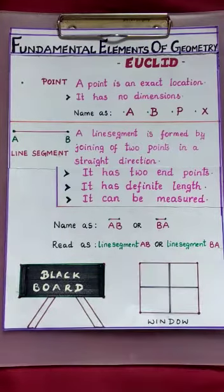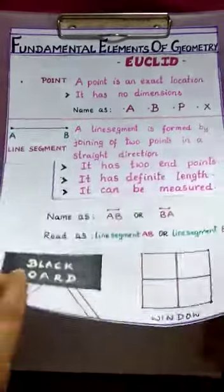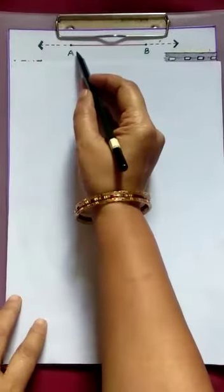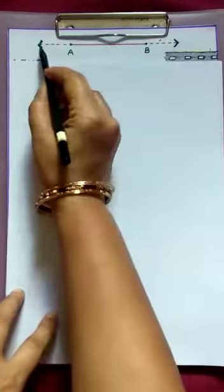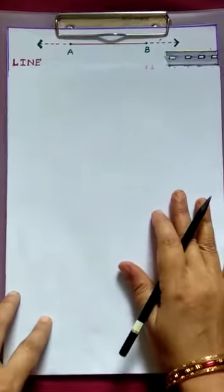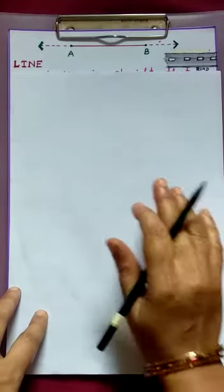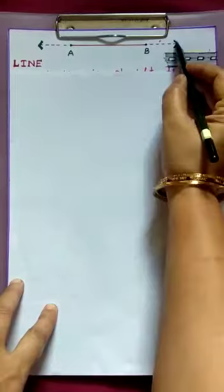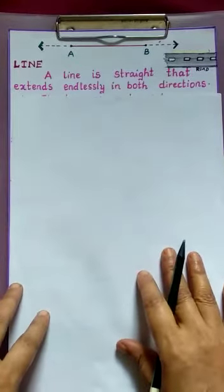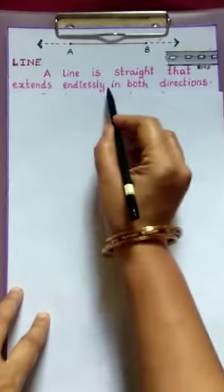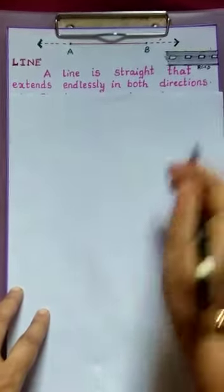Now, let us move to another concept. Children, if you observe here, this line segment is extended in both directions. If you extend like this, we get a line. So in this figure, arrow ends tell us there is no end in both directions. So a line is straight that extends endlessly in both directions.